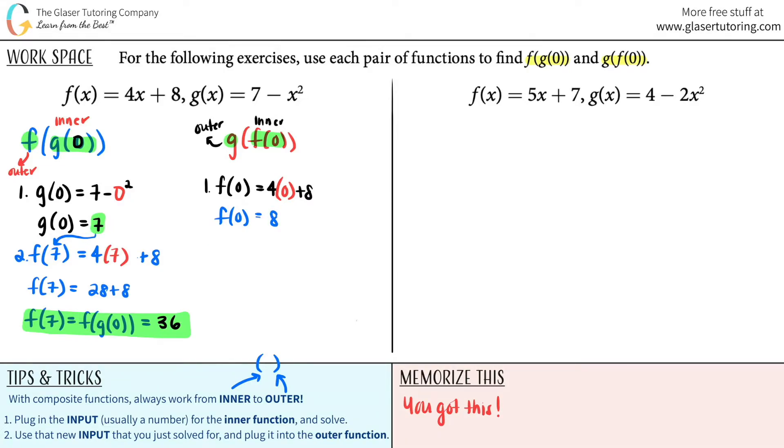Now we move on to the second part. Now comes the outer function. The outer function was g in this case, but what number are we going to use? It's the answer to the first part, right? So now it's g of 8, which means that any time that I see an x in my g function, I will plug in an 8.